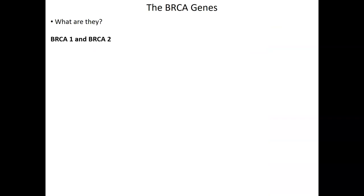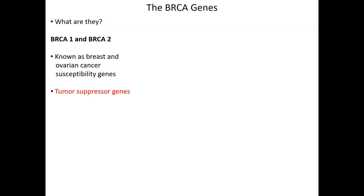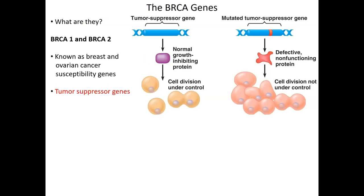There are two of them: BRCA1 and BRCA2. They are known as the breast and/or ovarian cancer susceptibility genes. They are tumor suppressor genes, which means when functioning properly and expressed, these genes control cell growth. Tumor suppressor genes promote health, and their gene products — the proteins they encode — keep cell division under control. When tumor suppressor genes are mutated and those proteins either are not made or are made in a non-functioning form, cell proliferation becomes uncontrolled, giving rise to the tumor.